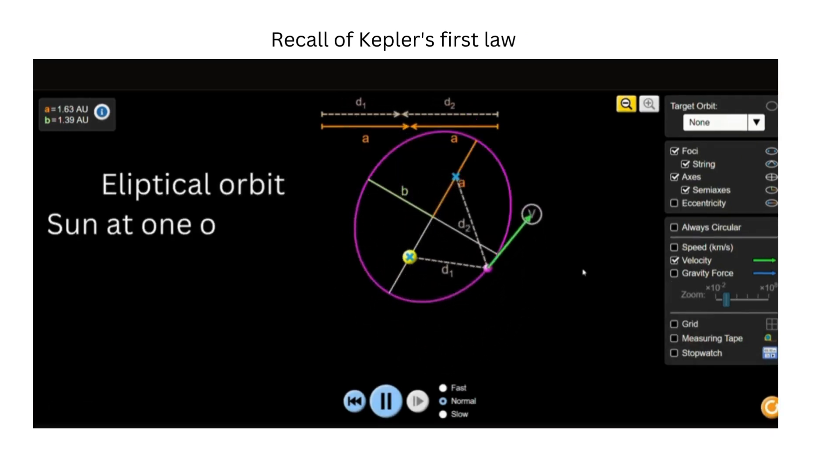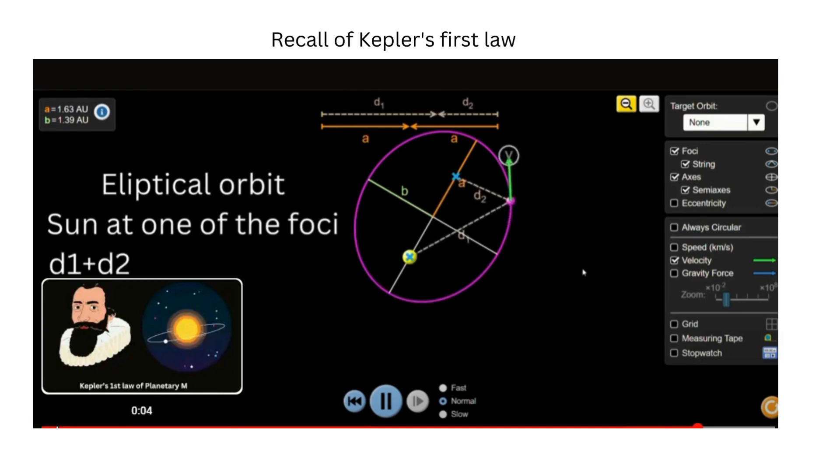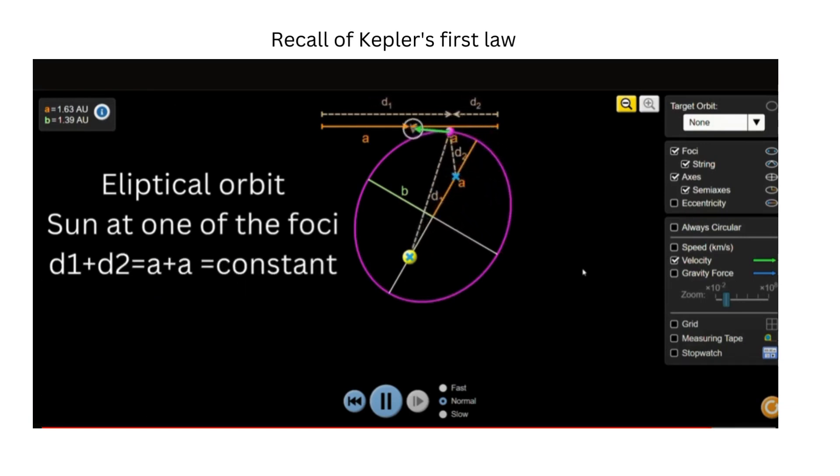Kepler's first law states that all the planets orbit the star in a path that resembles an ellipse, with the star being located at one of the foci of the ellipse. An ellipse is a special curve in which the sum of the distance from every point on the curve to two other points is a constant. The two other points are known as the foci of the ellipse.